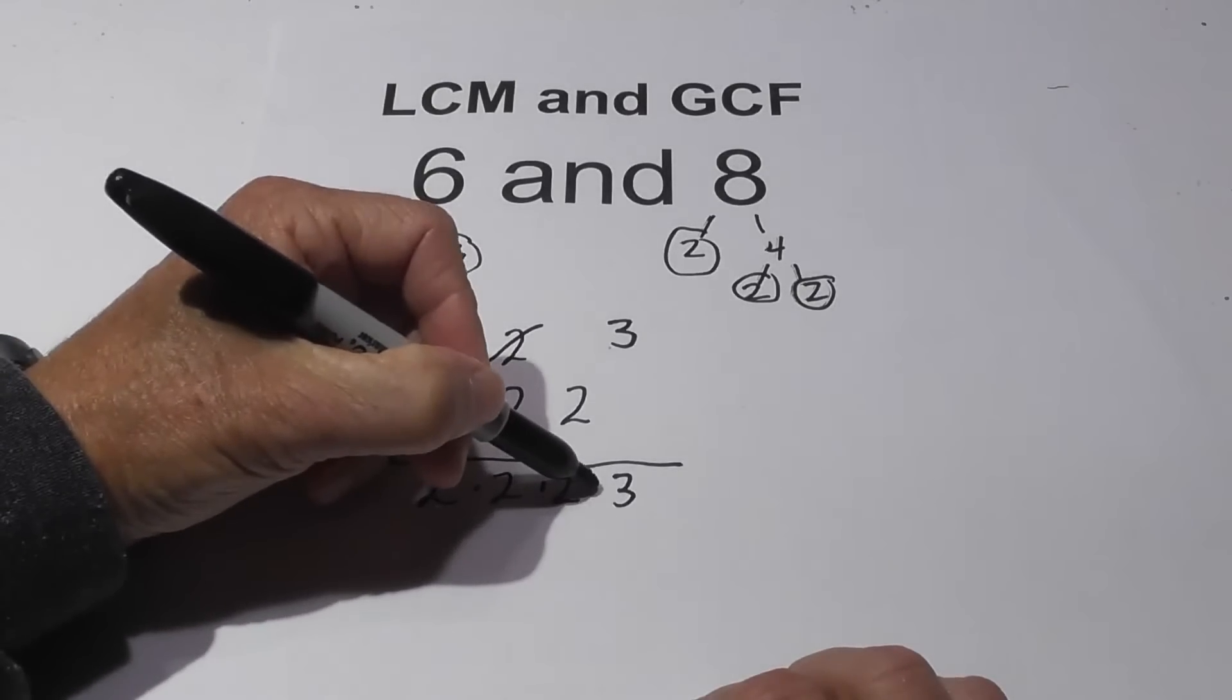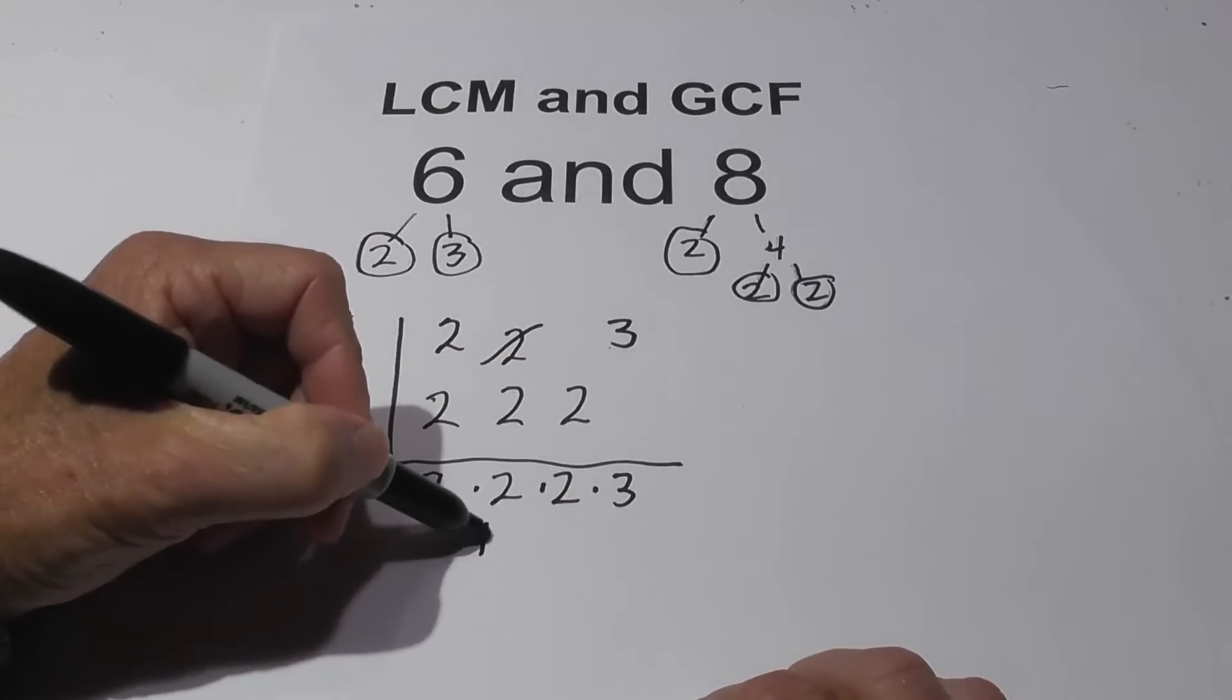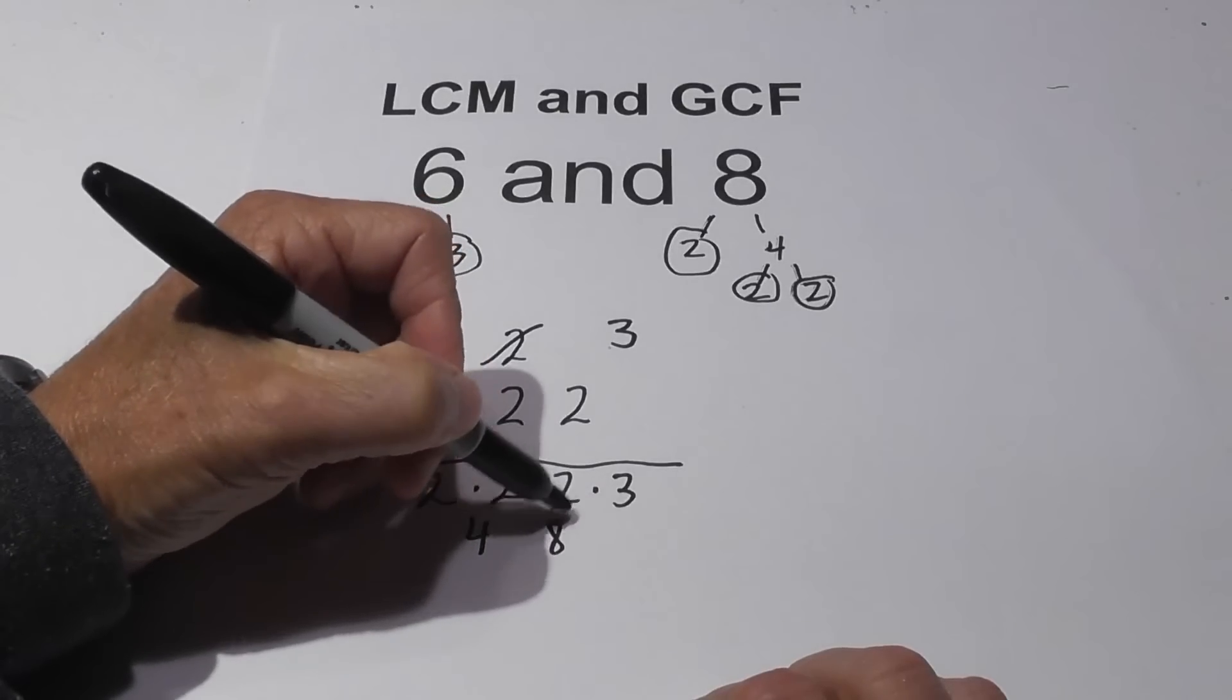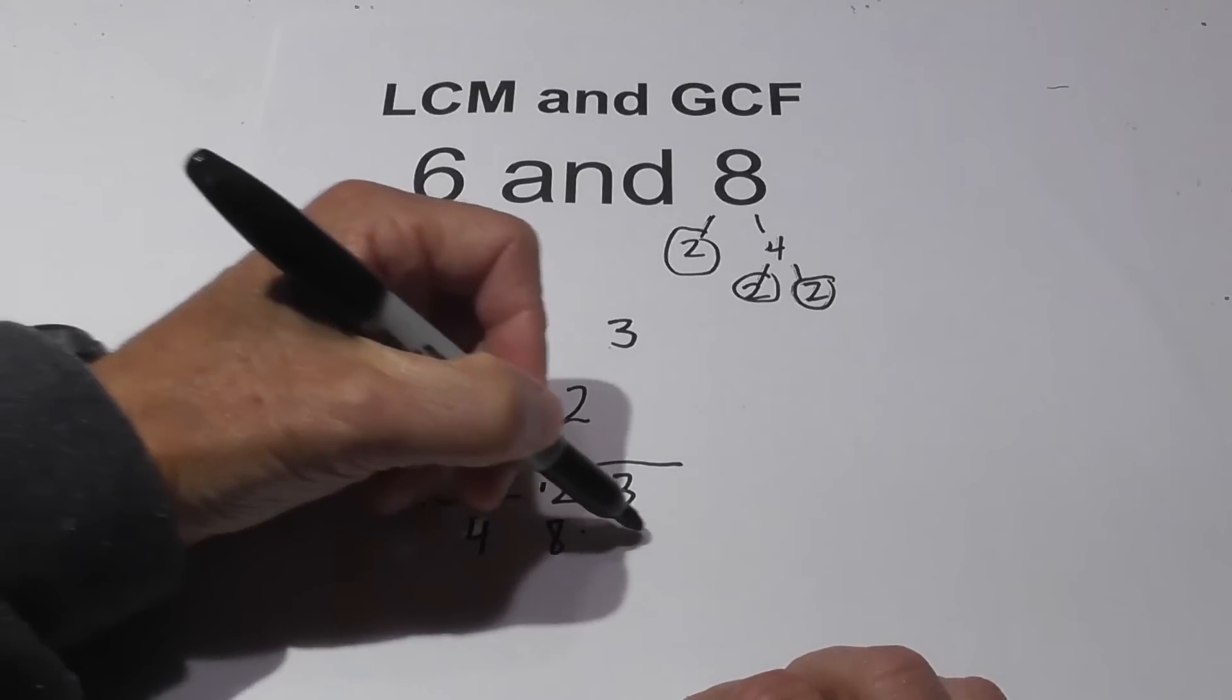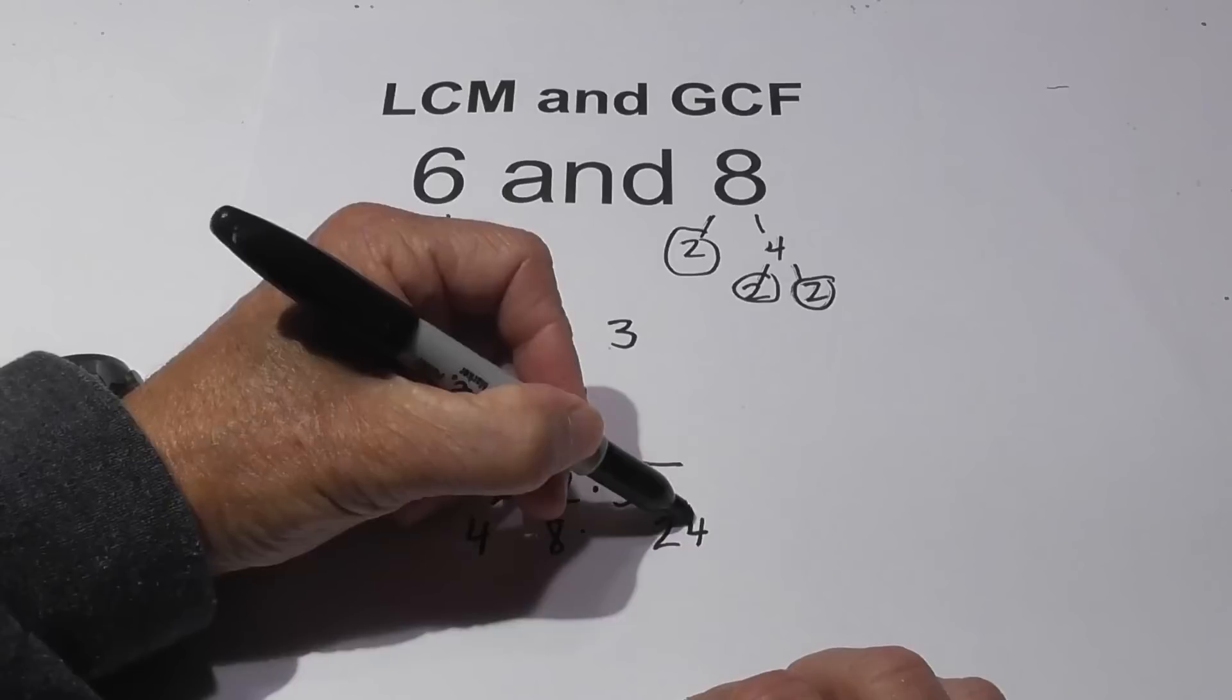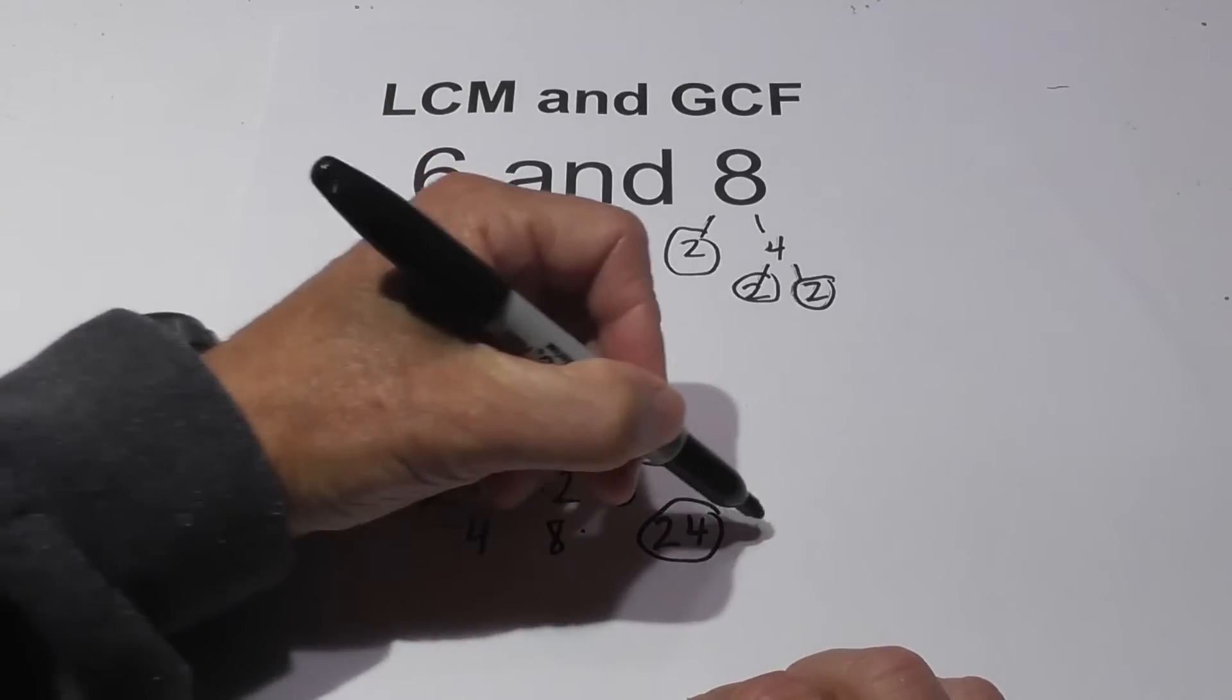Then all you do for the LCM is just multiply these together. 2 times 2 is 4, 4 times 2 is 8, and 8 times 3 is 24. So that's the LCM.